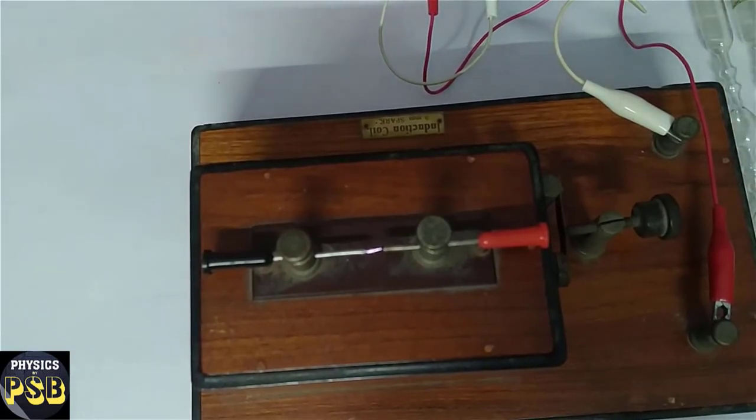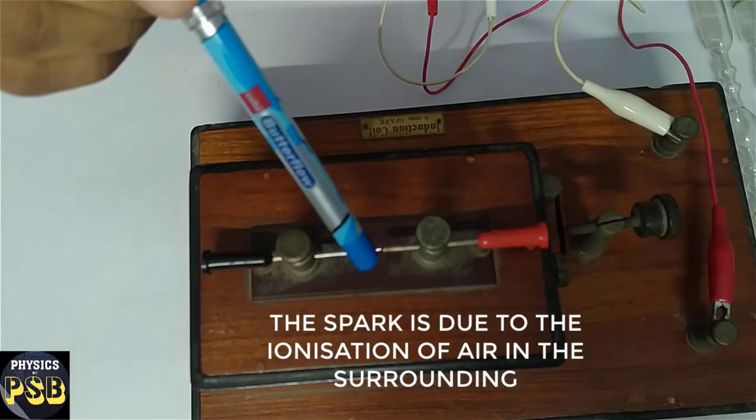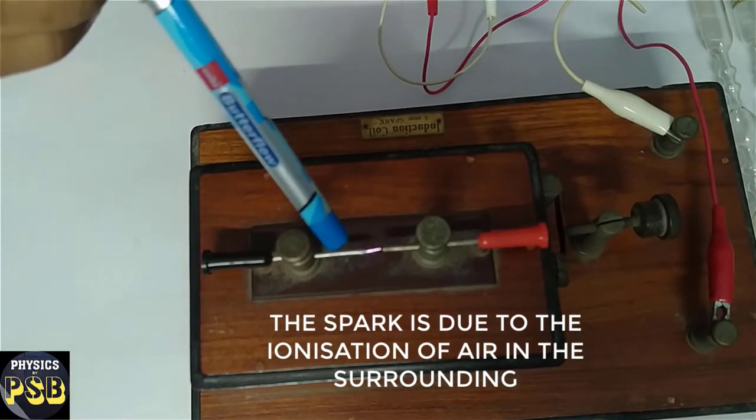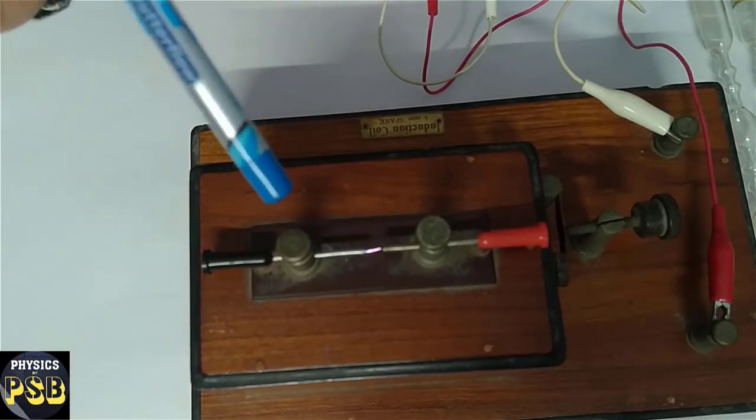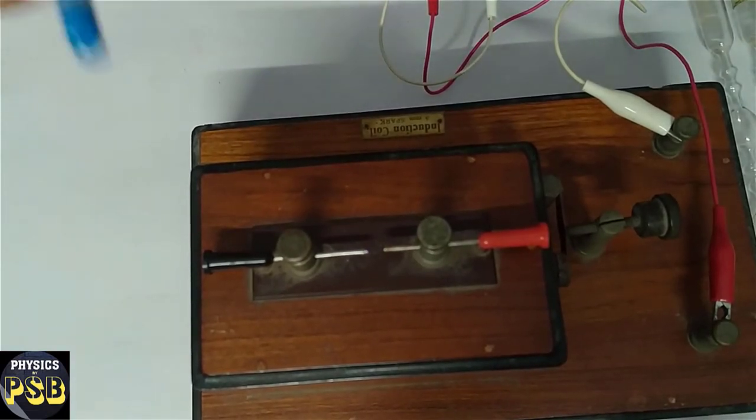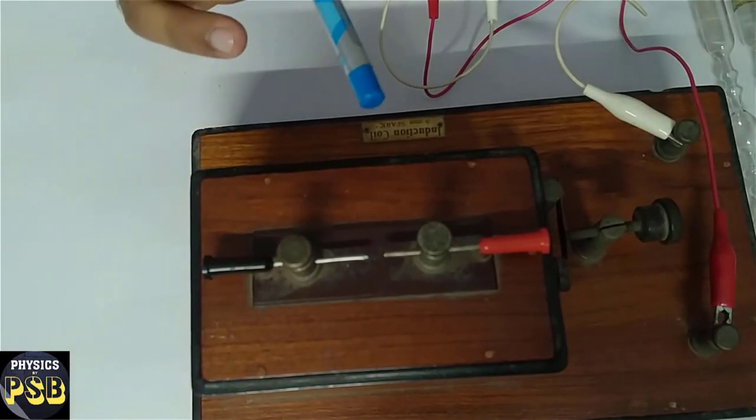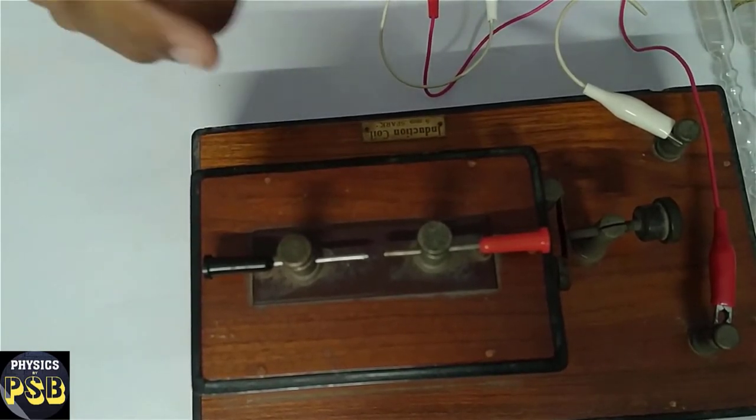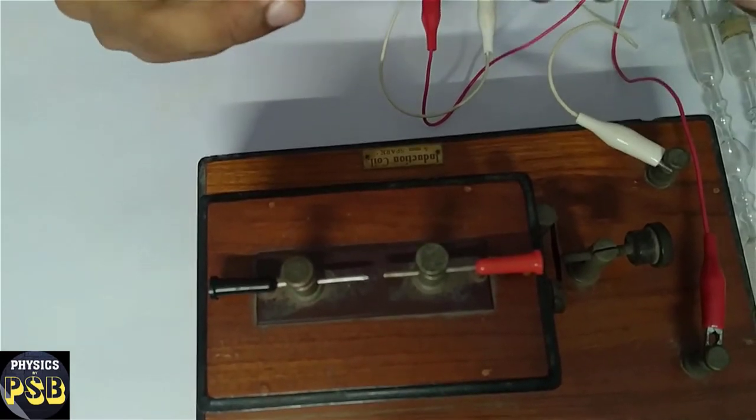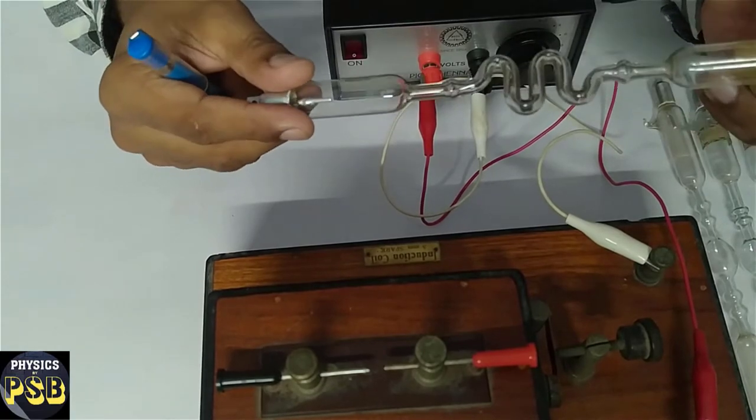This spark is a result of the ionization of gas present in the surrounding. Now I will switch it off. I will connect the secondary of the induction coil to the Gieseler tubes one by one and show you how the gas present in the tube discharges or conducts electricity.